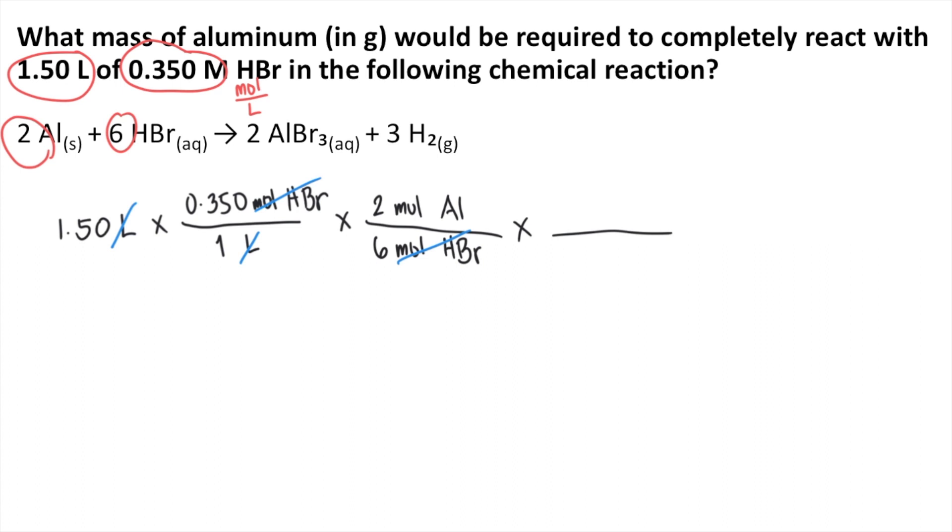So the molar mass of aluminum, 1 mole of aluminum, is equivalent to 26.98 grams of aluminum, according to the periodic table. So the moles of aluminum would cancel out. And now this gives us the grams of aluminum. So that will be the unit of our final answer.